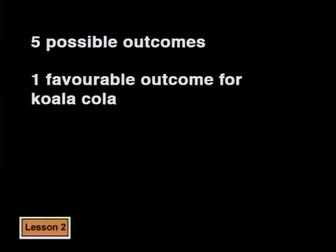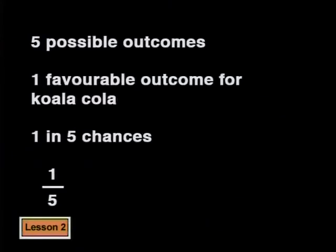Then Gerard and Refilwe did something very interesting — they added another type of cola. Now the people they test must choose from five cups. If a person is just guessing, what is the probability of choosing the right cup? The number of favorable outcomes is still only one, but the total number of possible outcomes has gone up to five. So a person now has a one in five chance of being right — it's getting harder to be right just by guessing.